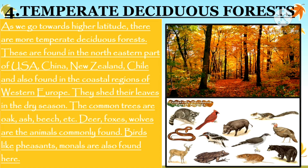The common trees are oak, ash and beech. Deer, foxes and wolves are the animals commonly found here. Birds like pheasants and monals are also found here. Fauna means the animals that belong to a particular area, and flora means vegetation — oak, ash and beech.